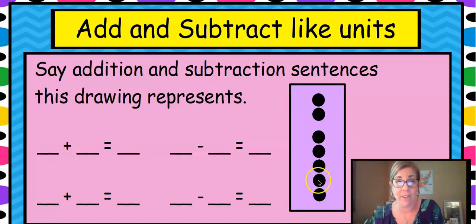Now I bet you've already looked over here and you said, oh my gosh, that's seven. It's seven. I know it because this group together is five. It's just like a ten frame, but it's stacked up and down. So we're going to add and subtract like units. We're going to say addition and subtraction sentences that this drawing represents. Now we've already said that this number is seven.